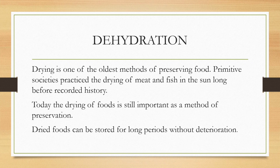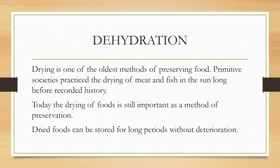Drying is one of the oldest methods of preserving food. Primitive societies practiced the drying of meat and fish in the sun long before recorded history, so this has been followed even in early ages. It is a very easy method and still an important method of preservation — it may be low cost and easy to perform. Dry foods can be stored for a long period of time; the shelf life can be very long and kept without any kind of damage or deterioration.